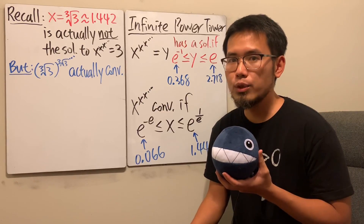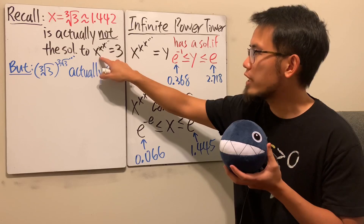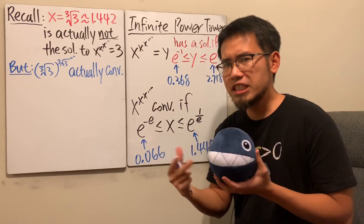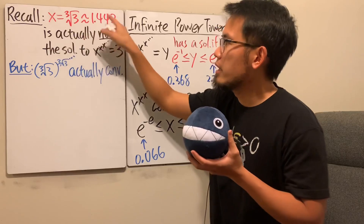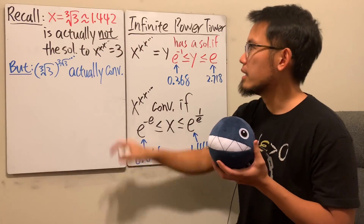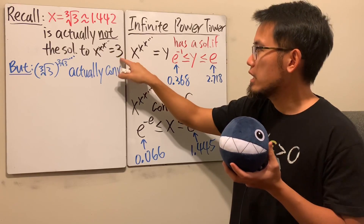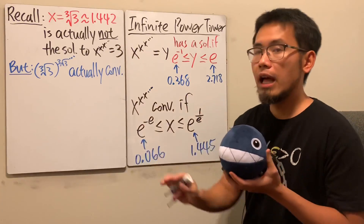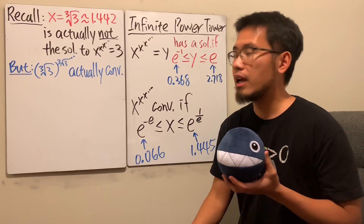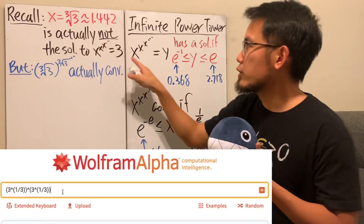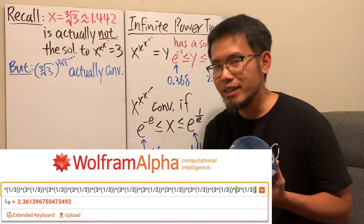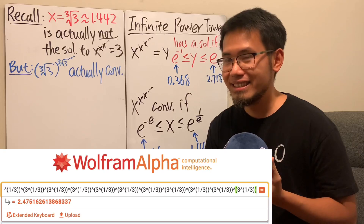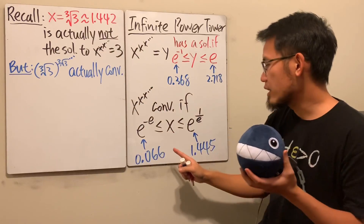Welcome back. Let's do a quick review: last time we had the equation x^x^x... infinitely many times equal to 3, and we saw the answer seems to be the cube root of 3. However, that is actually not the solution to this equation. When this number is outside the valid convergence interval — and 3 is bigger than e^(1/e) ≈ 2.718 — the infinite power tower does not have an answer. That said, the tower of cube-root-of-3 stacked infinitely does converge, because the cube root of 3 is inside the interval.